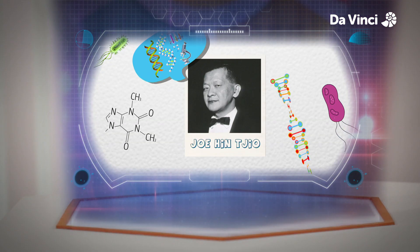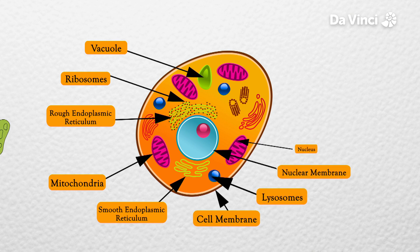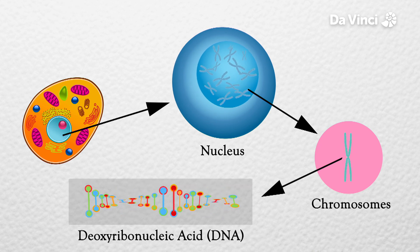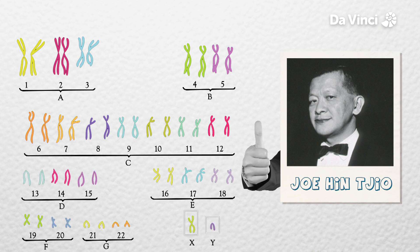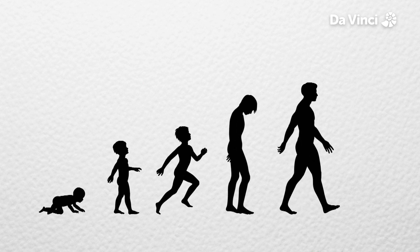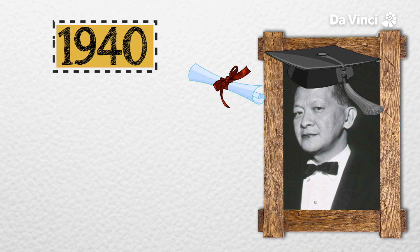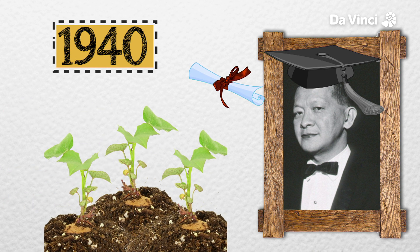This is Joe Hin Tjio, an Indonesian-born American cytogeneticist. Cytogenetics means the study of the structure and function of the cell, especially the chromosomes, which function as the agents of heredity. Tjio was the scientist credited with discovering the correct number of chromosomes in human cells. He was born in November 1919 in Java. Growing up, he learned to speak French, German, Dutch, and English. His father was a professional portrait photographer and Joe used to help him as an assistant. In 1940, aged 21, he completed his degree in agriculture and became deeply involved in breeding potatoes, trying to create a hybrid that was resistant to common diseases.